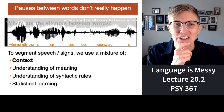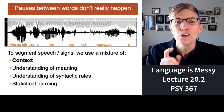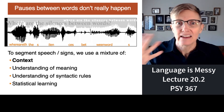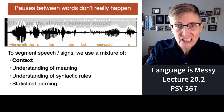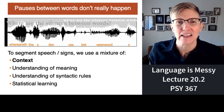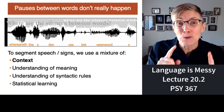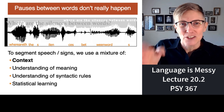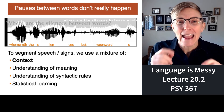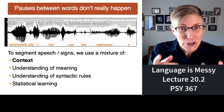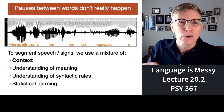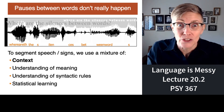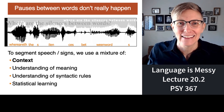Have you ever noticed that when you hear someone speak a language you don't know, it sounds like it all runs together — continuous gobbledygook? It turns out that's exactly what you sound like to people who don't know English. The illusion of gaps between words only happens with languages you know. If you don't know the language, it sounds like one big continuous stream of sound — because that's actually what it is.